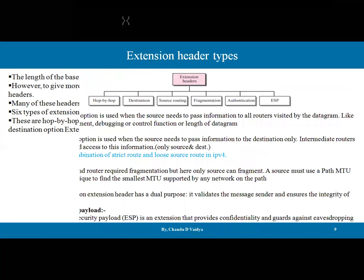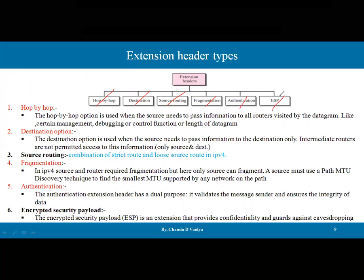There are six types of extension headers: hop-by-hop, destination, source routing, fragmentation, authentication, and ESP (Encrypted Security Payload). The hop-by-hop option is used when the source needs to pass information to all routers visited by the datagram — informing every intermediate router with management information, debugging or control functions, or the length of the datagram.